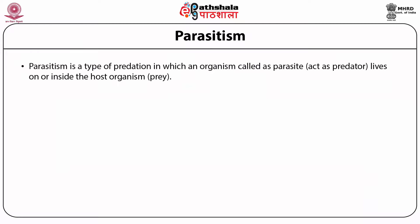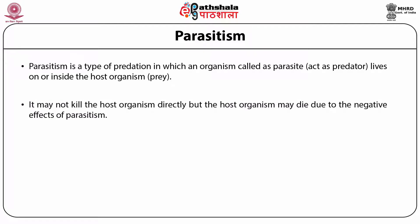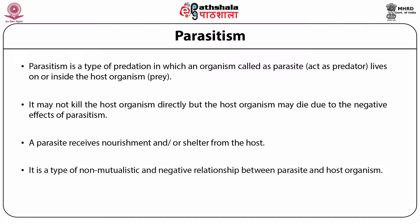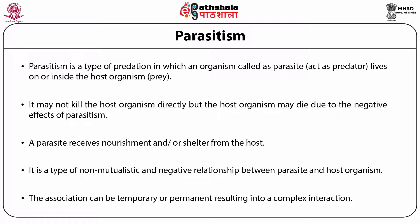Parasitism. Parasitism is a type of predation in which an organism called the parasite acts as a predator and lives on or inside the host organism as prey. It may not kill the host organism directly, but the host organism may die due to the negative effects of parasitism. A parasite receives nourishment and/or shelter from the host. It is a typical non-mutualistic and negative relationship between parasite and host organism. The association can be temporary or permanent, resulting in a complex interaction.